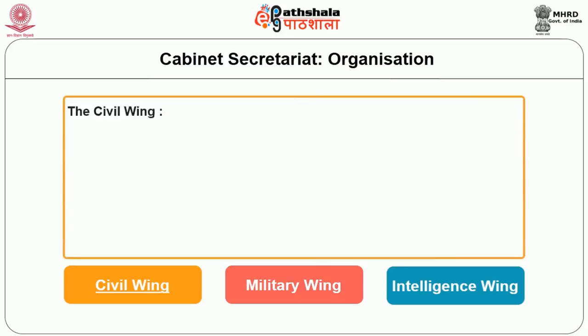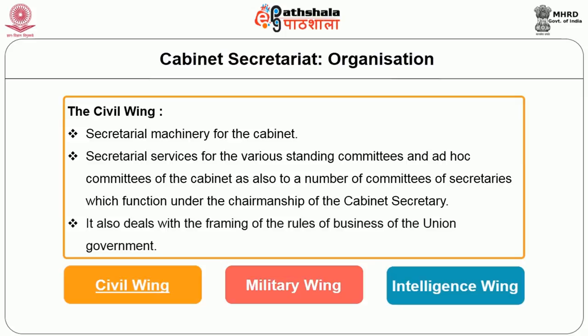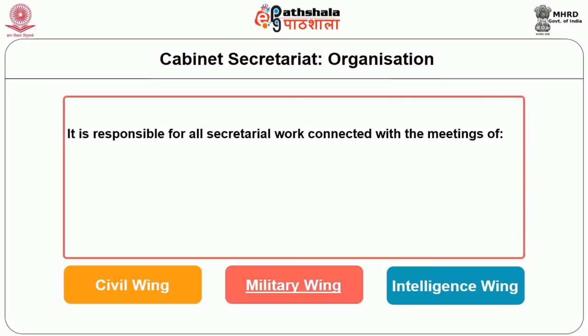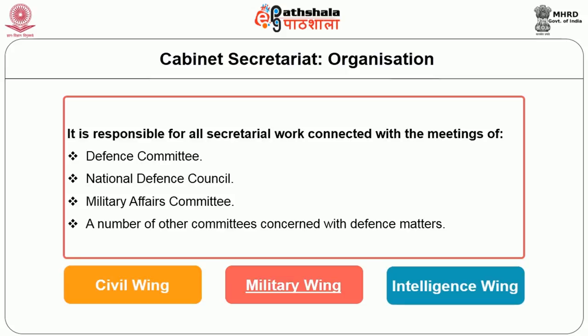The civil wing acts as the secretarial machinery for the cabinet, providing secretarial services for various standing committees and ad-hoc committees of the cabinet, as also to a number of committees of secretaries which function under the chairmanship of the cabinet secretary. It also deals with the framing of rules of business of the union government. The military wing is responsible for all secretarial work connected with the meetings of the defense committee, national defense council, military affairs committee, and a number of other committees concerned with defense matters.